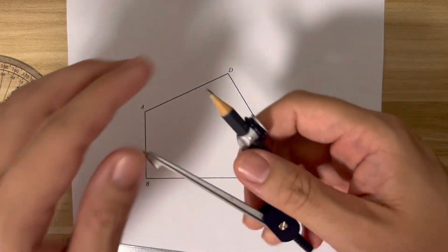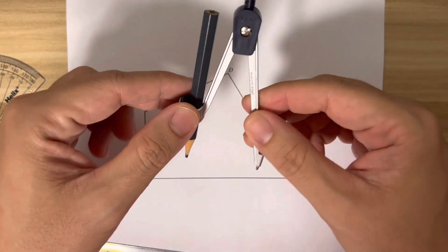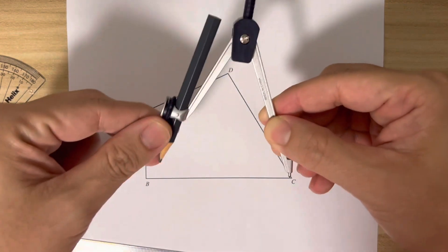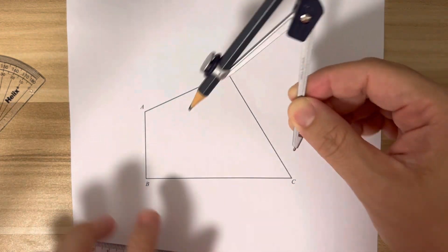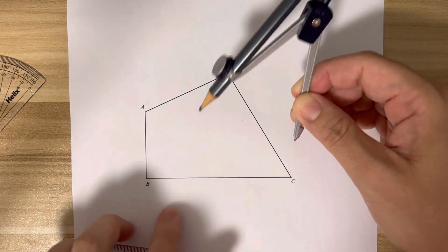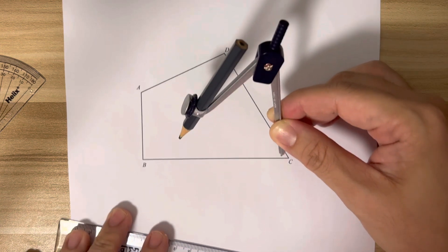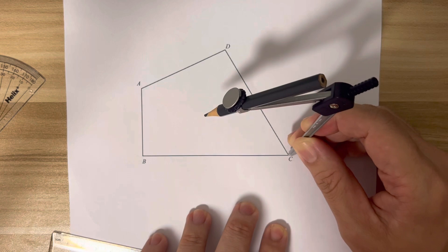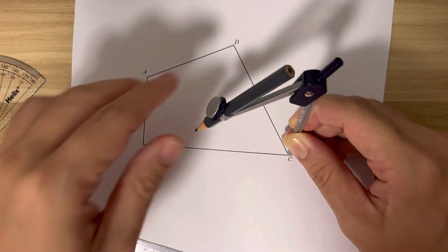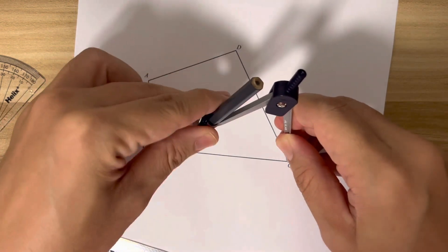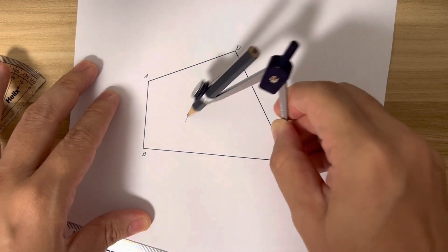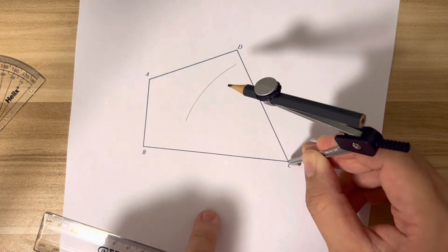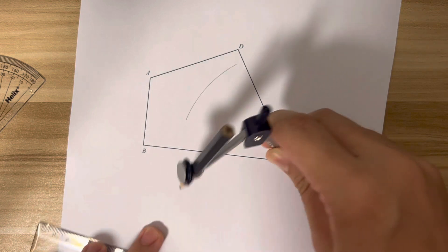Taking out a compass to draw a perpendicular bisector, we need to make sure that this distance here is more than half of this line. Now place the pointer tip at one of the points, and I'm going to draw an arc on either side of this line.